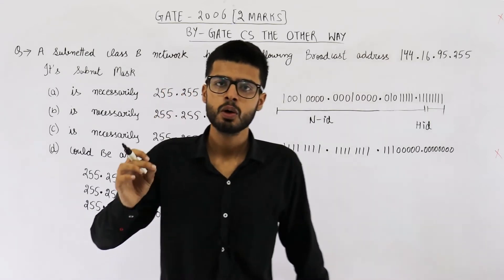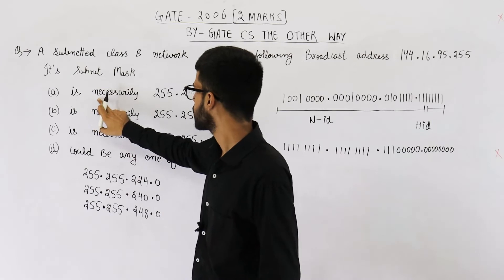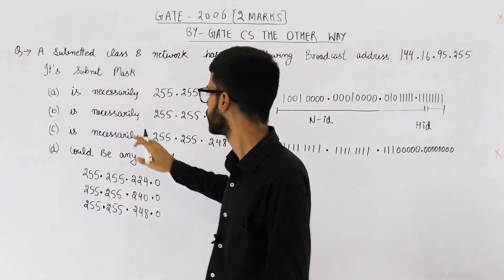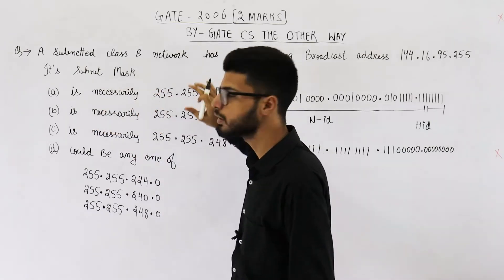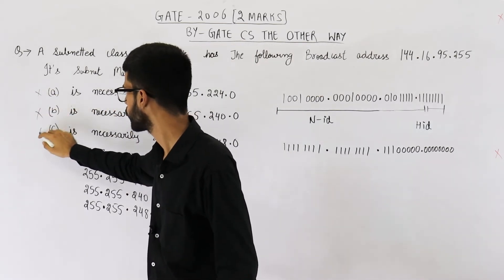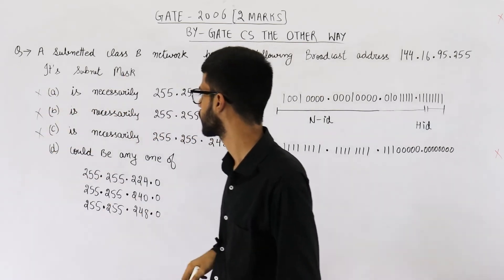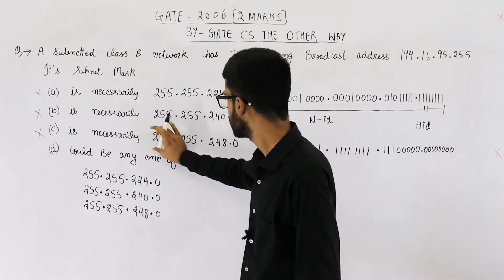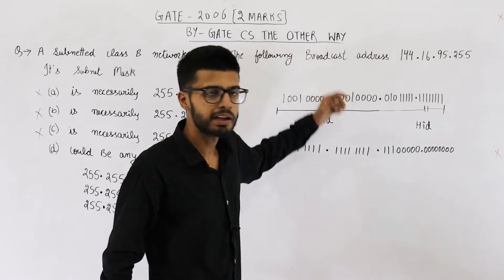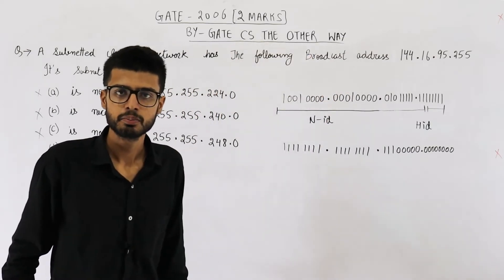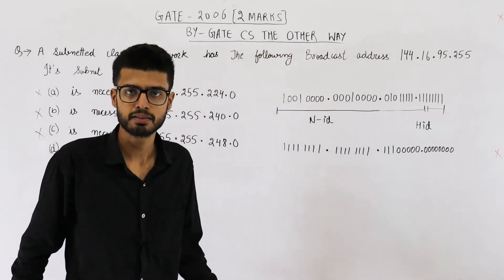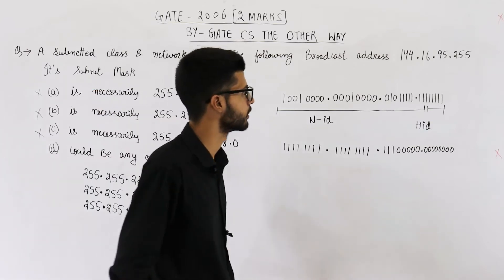That means all the options that say a specific mask will 'necessarily' be the answer are incorrect. So options A, B, and C are incorrect because they are each fixing one specific subnet mask. But from the given conditions we don't know what the subnet mask will be — there could be many possible subnet masks, and any one of them could be correct.